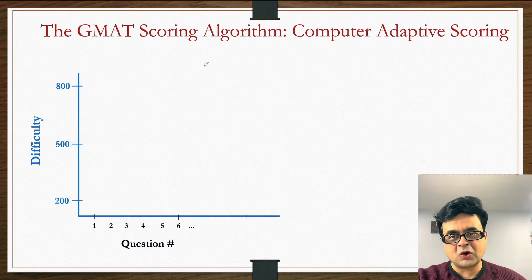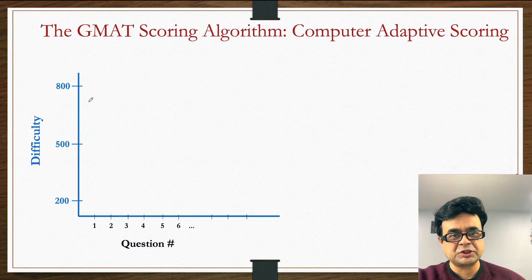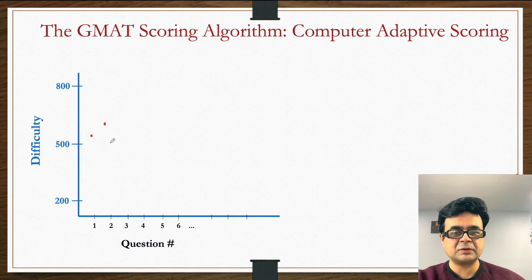Understanding how computer adaptive scoring works with the help of a graph: on the y-axis, we have the difficulty level of questions, and on the x-axis, we have question numbers. Let's say I'm the test taker and the first question I get from GMAT is somewhere in the middle, an average question at 500 level, and I get this question right. If I get it right, the next question would be slightly more difficult. That's how computer adaptive algorithm works.